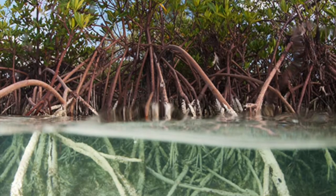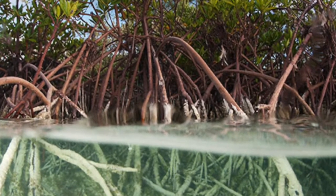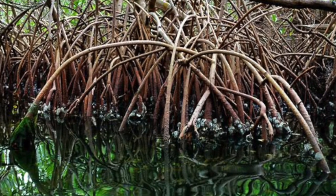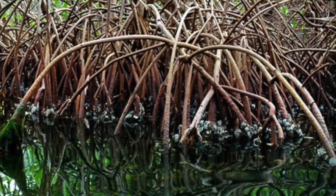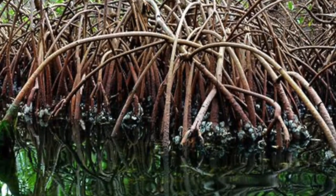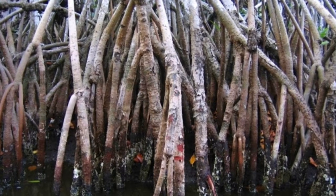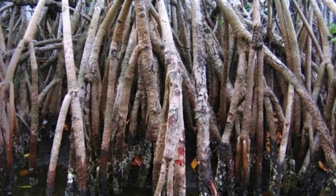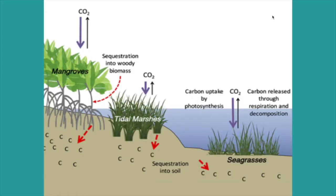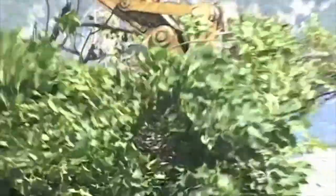Mangroves can store so much carbon largely in part due to the propped root systems. The root systems of mangroves evolved to be very complex and stilted to best deal with the variability of the rising and lowering tides, which consequently trap sediments underwater, which are not broken down due to the lack of oxygen. The lower rates of decomposition allow for large amounts of carbon to be sequestered in the soil. This carbon is typically stored in the thick muck layer of the soil up to 6 meters below the surface and, when the ecosystem is left unharmed, can remain stored for millennia.